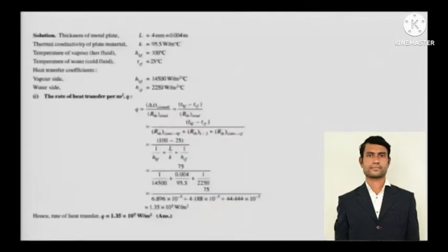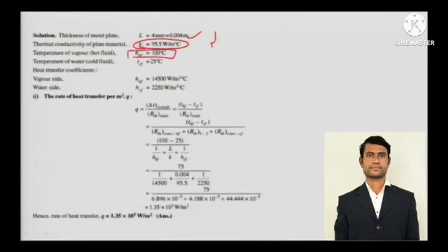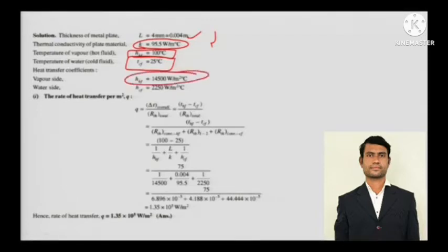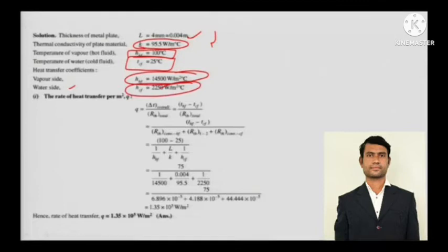For the solution: the thickness of the metallic plate L equals 4 mm, which must be converted to meters. The thermal conductivity k of the plate material is given. The temperature of the vapor (hot fluid) is 100 degrees Celsius, and the temperature of the water (cold fluid) is 25 degrees Celsius. The heat transfer coefficient on the vapor side and the convective resistance of the water side, valued at 2250 watts per meter square degree Celsius, are also given.